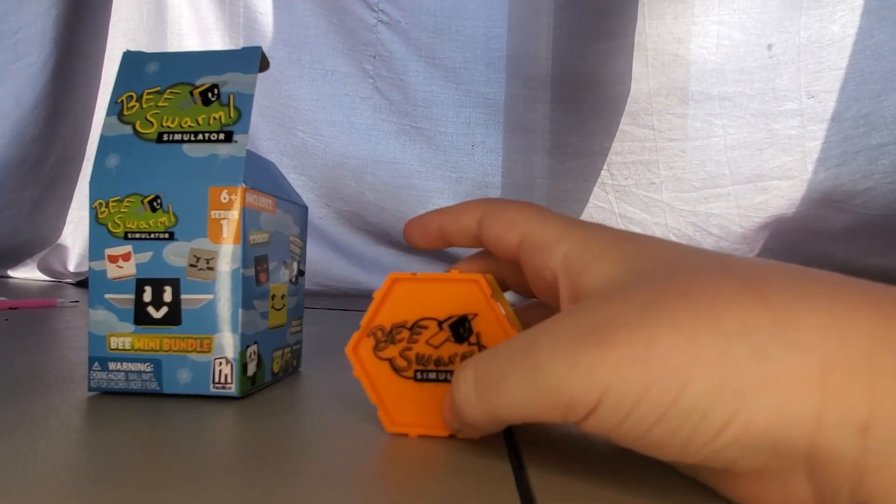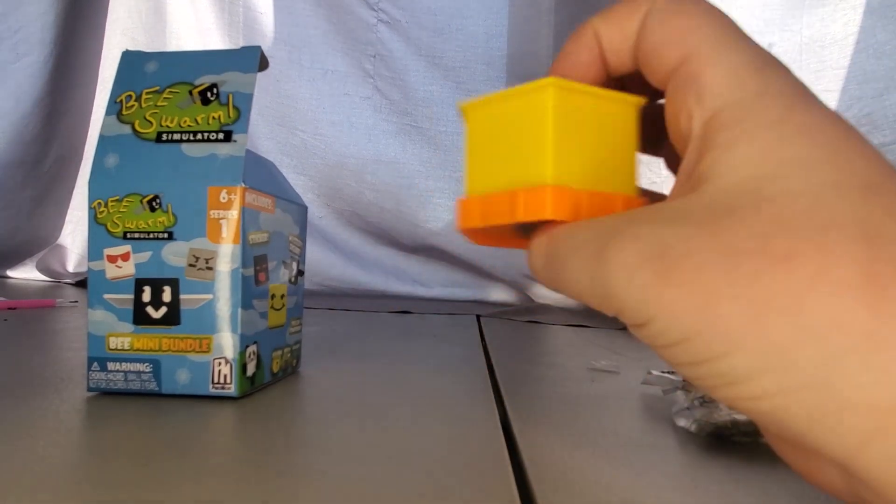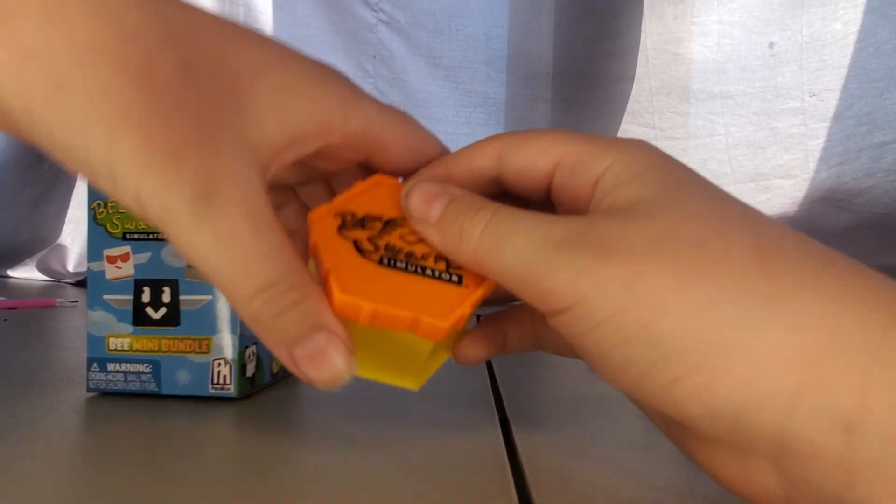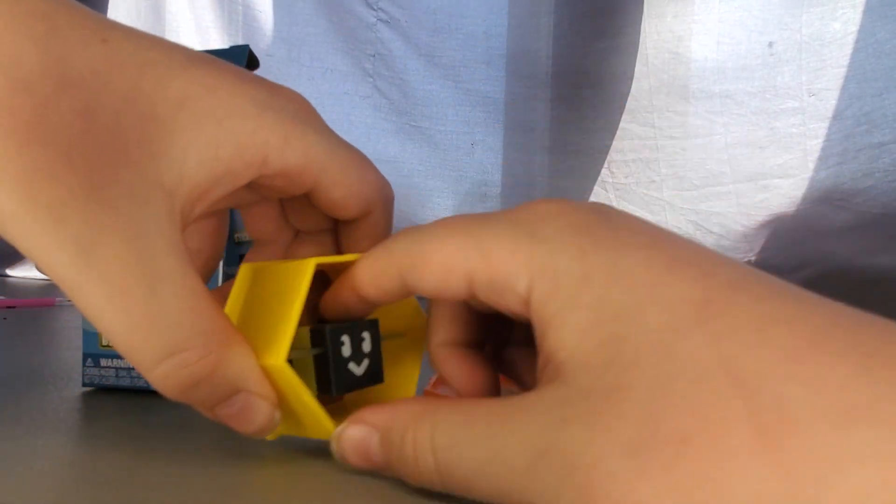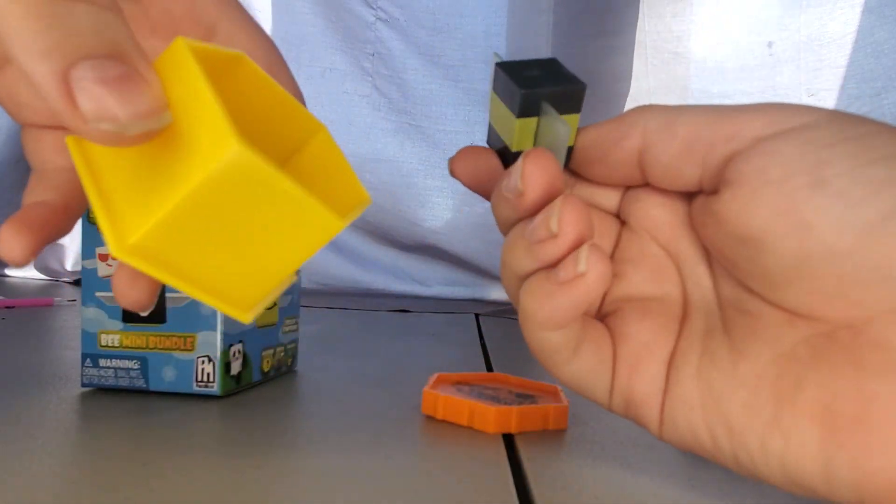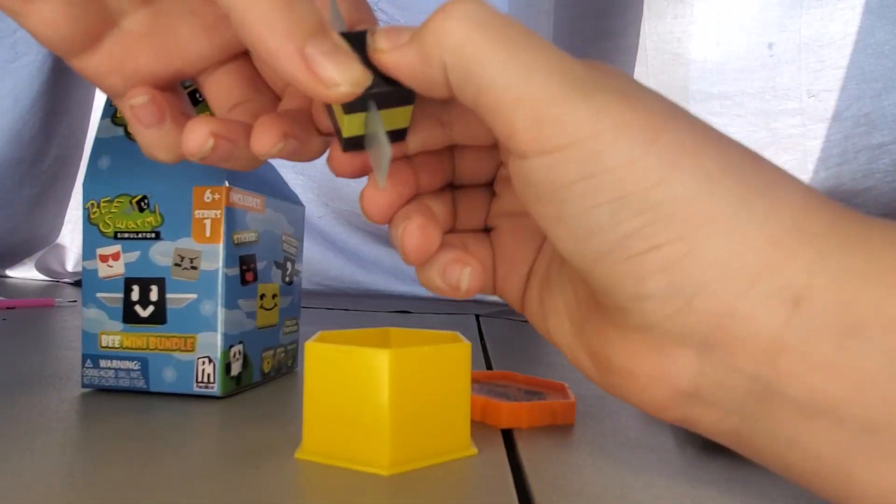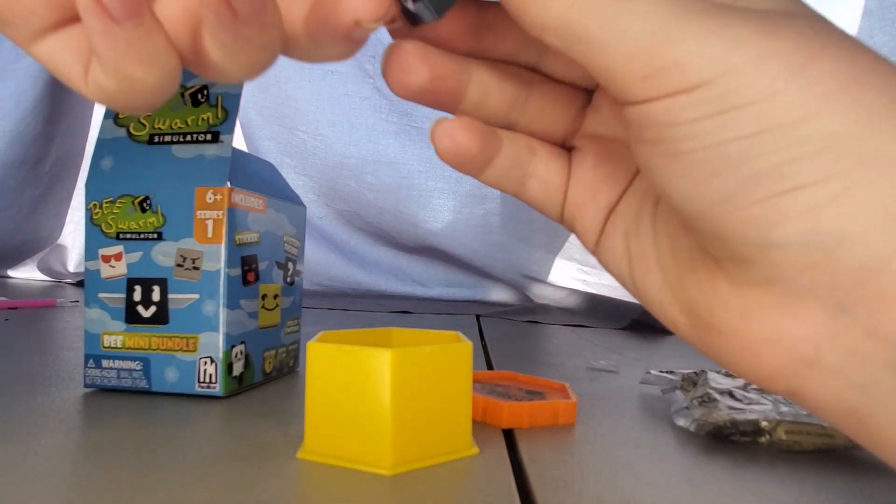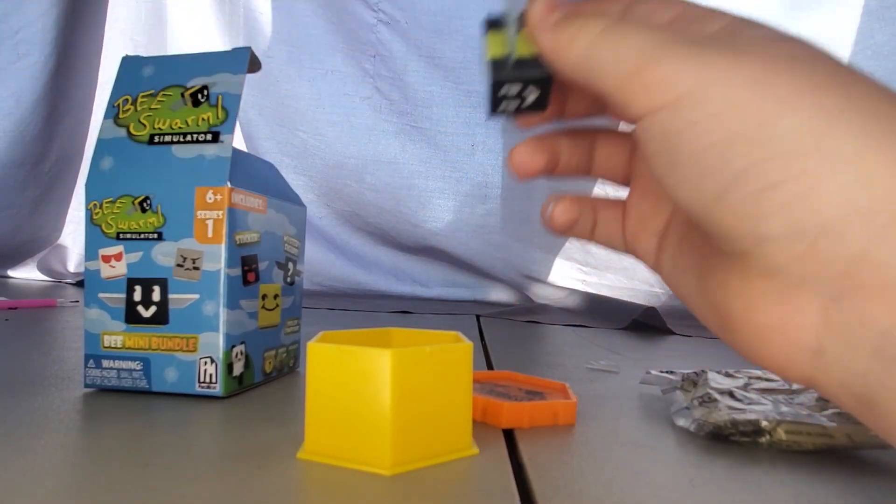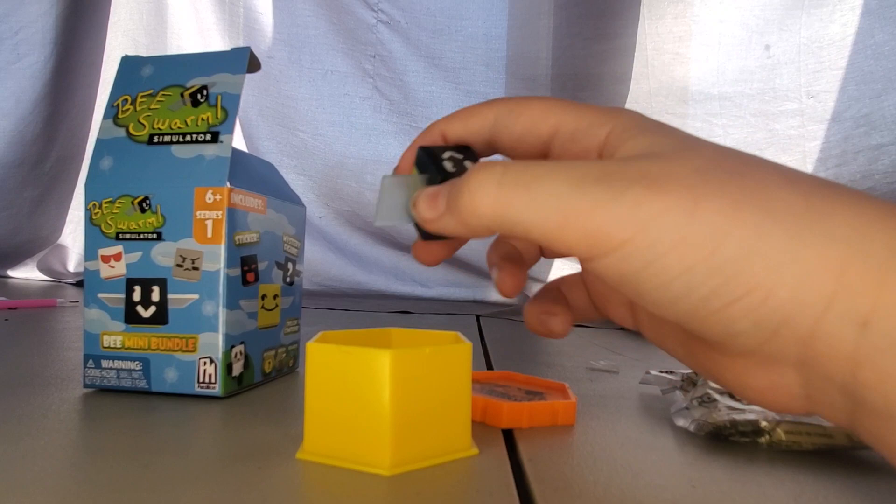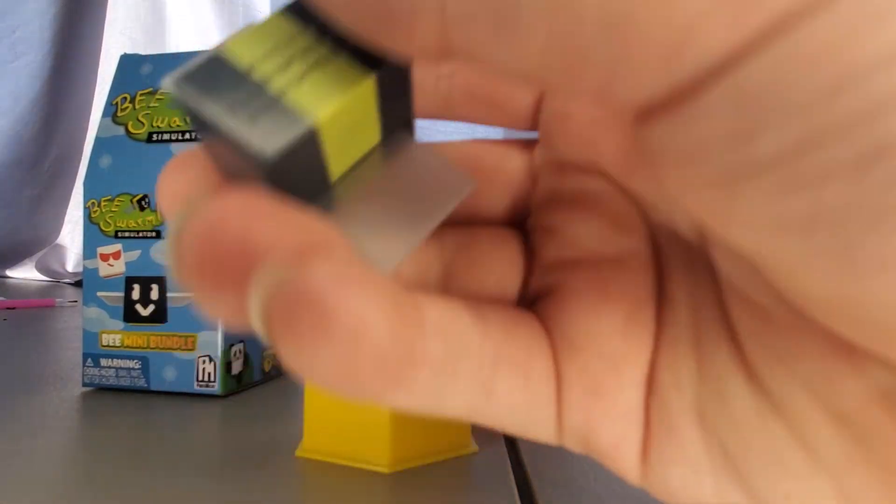And then we have this which has Beast Worm Simulator on the front. I can open this. And we've got a basic bee. It looks like you can kind of open it up from the back. But we've got a basic bee.